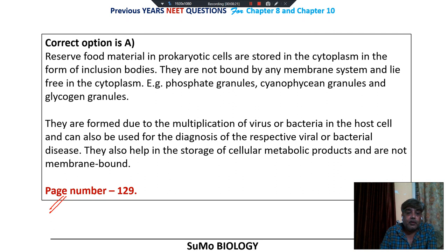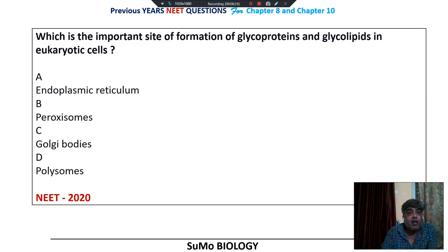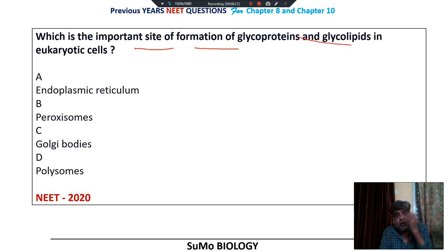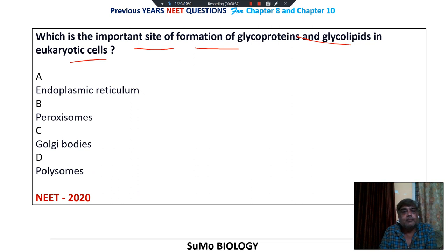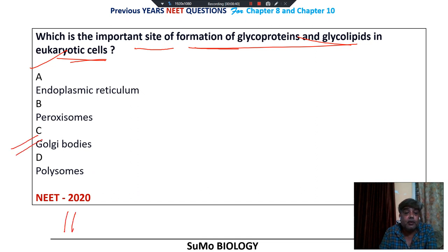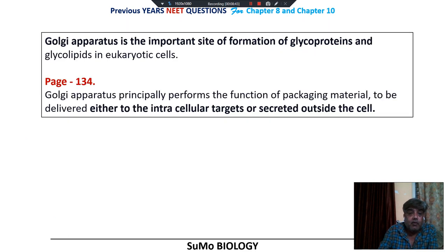Mentioned in NCERT on page number 129. Which is the important site of formation of glycoprotein and glycolipid in eukaryotic cells? As clearly mentioned in NCERT, Golgi bodies are the important site of formation of glycoprotein and glycolipid in eukaryotic cells. You should go with Golgi body. This is from NEET 2020, mentioned on page number 134.